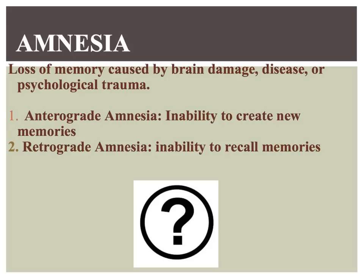There are two types of amnesia. Amnesia is the loss of memory caused by brain damage, disease, or psychological trauma such as repression. Anterograde amnesia is the inability to create new memories — for example, you might have gone to class with a buddy every day this year, but because of anterograde amnesia you have to introduce yourself to them every day, or it would be difficult to form neural networks for new concepts.